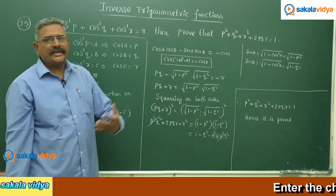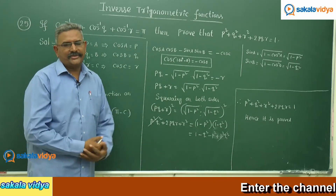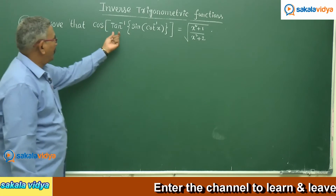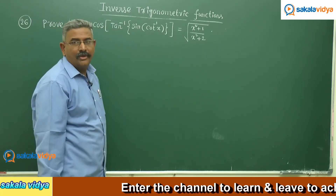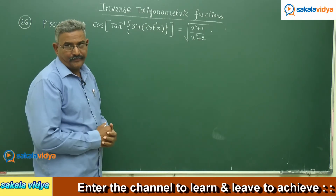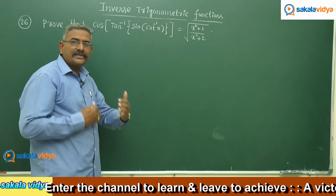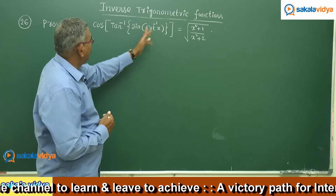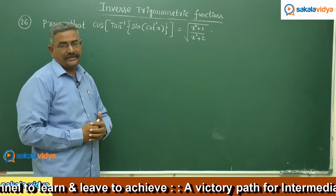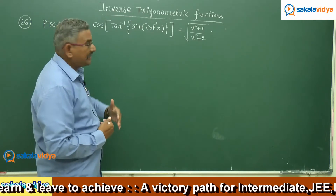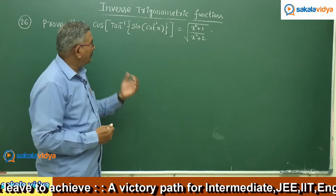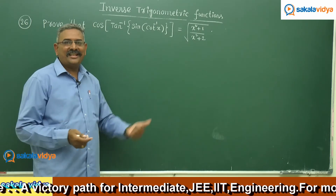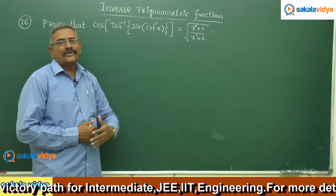You can try other methods as well. Now the next problem: cos(tan⁻¹(sin(cot⁻¹x))) = √((x²+1)/(x²+2)). This is a more complex problem. Let cot⁻¹x = a, so cot a = x. Then sin(cot⁻¹x) = sin a. Using a right triangle where cot a = x/1, the hypotenuse is √(x²+1), so sin a = 1/√(x²+1). We need cos θ, which will equal √((x²+1)/(x²+2)).